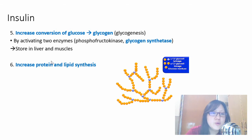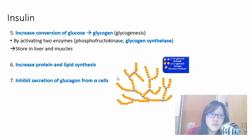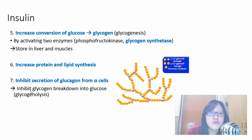Insulin can also increase protein and lipid synthesis — using glucose and converting it to protein and lipid rather than glycogen. You don't need to know the details, just that it happens. Insulin also inhibits the secretion of glucagon from alpha cells, which stops whatever glucagon does. For example, glucagon promotes glycogen breakdown into glucose — this is inhibited. Glycogen breakdown is called glycogenolysis — 'olysis' meaning breaking down.